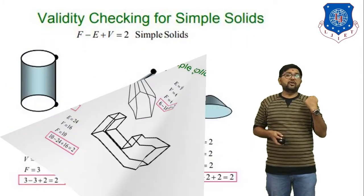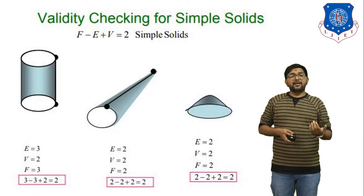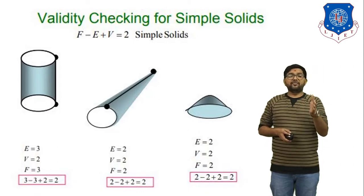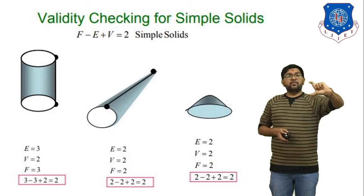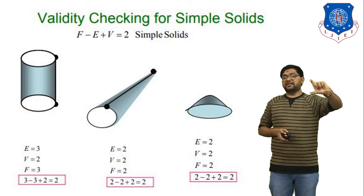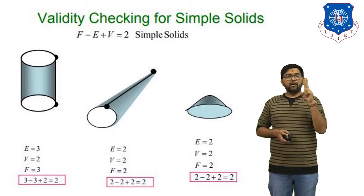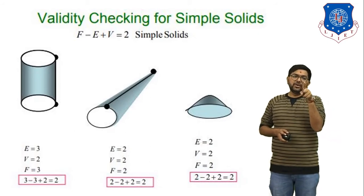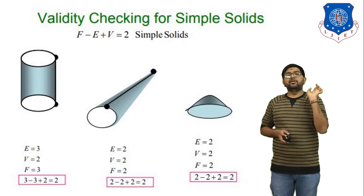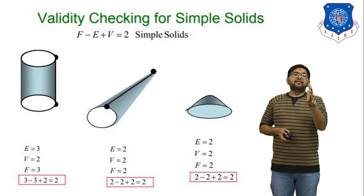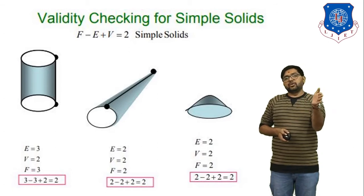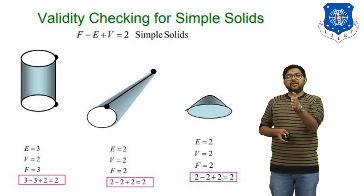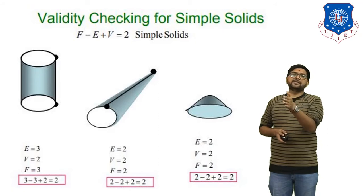Now we have validity checking for complex objects. For simple objects, F minus E plus V equals 2. For a cylinder: number of edges equals 3, number of vertices equals 2, number of faces equals 3. You can check validity for the cylinder, cone, and half circle using the Euler equation by counting the edges, vertices, and faces yourself.